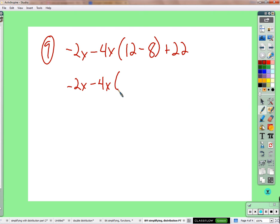So I'm going to multiply negative 4x by 4. You could distribute the negative 4x to the 12 and to the negative 8, and you'll get the same answer, but it's a little more effort, I think. Negative 2x, negative 4x times 4 is negative 16x plus 22. Negative 2x minus 16x is negative 18x plus 22.